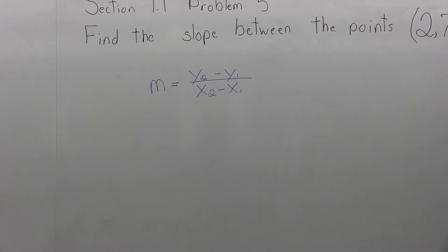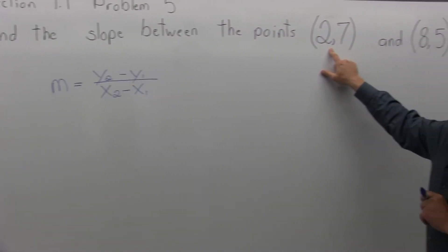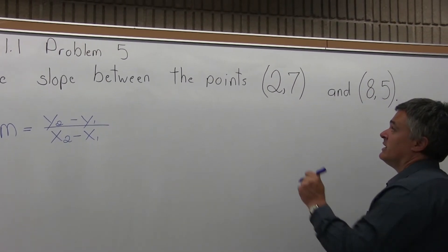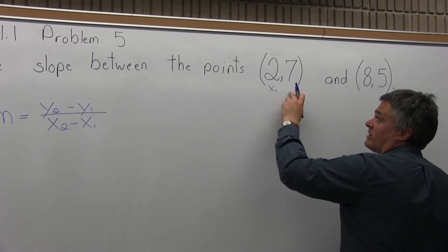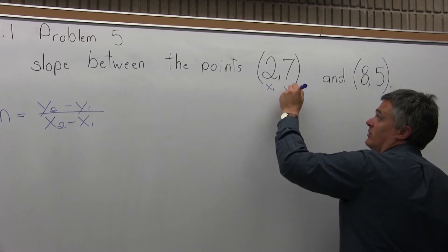(2,7) is given first, so I will consider it to be point 1. The x-coordinate of 2 will be labeled x1, and the y-coordinate of 7 will be labeled y1.